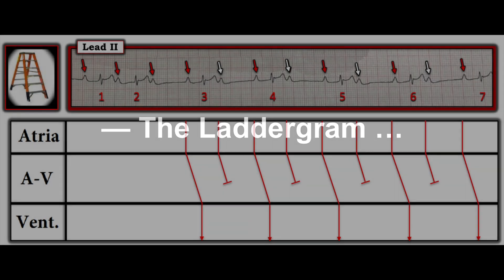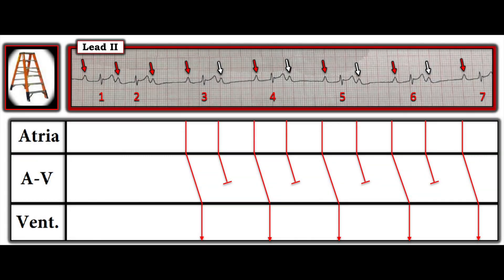In my last couple of minutes, I'm going to talk about a laddergram. It took me literally a decade or two to be comfortable drawing laddergrams, but you're going to understand them in the next five minutes. Laddergrams are great because they explain the mechanism of the rhythm — they make it a lot easier to see what's going on. For any laddergram, we have three tiers: travel through the atria, through the AV node, and through the ventricles. Along the horizontal axis is time.